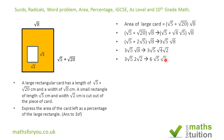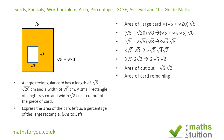The area of the cutout is √5 times √2. So what's left is the large area minus the cutout: 6√5√2 minus √5√2. If we call √5√2 as x, then we have 6x minus x.